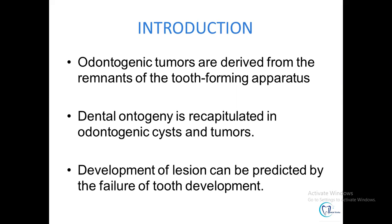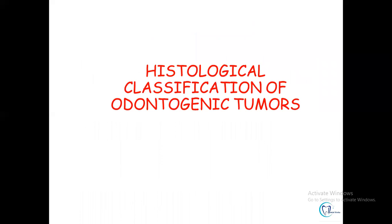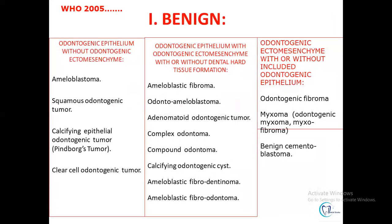The development of the lesion can be predicted because whenever there is failure of tooth development or abortive tooth development, it will lead to the development of odontogenic cells and tumors. Before proceeding, we'll have a brief discussion on the histological classification of odontogenic tumors. In 2005, WHO classified odontogenic tumors into two broad categories — benign and malignant — with the benign category further subclassified into: odontogenic epithelium without odontogenic ectomesenchyme, odontogenic epithelium with odontogenic ectomesenchyme with or without hard tissue formation, and odontogenic ectomesenchyme with or without odontogenic epithelium.